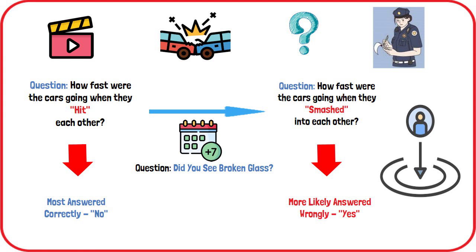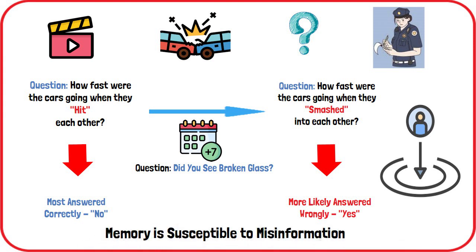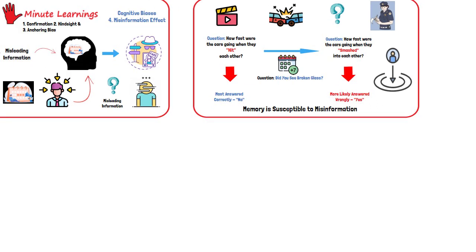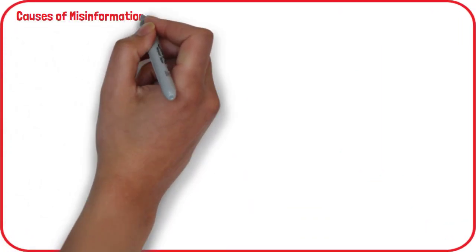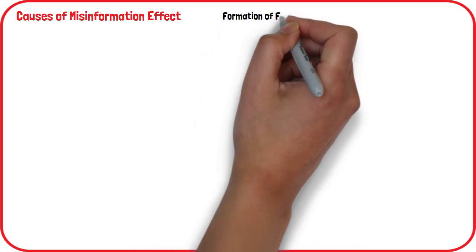While it was a relatively minor change in how the question was asked, it significantly changed how witnesses recalled the event. This demonstrates how susceptible memory is to the effects of misinformation. Why does the misinformation effect happen, potentially leading to the formation of false memories? There are a few different theories.